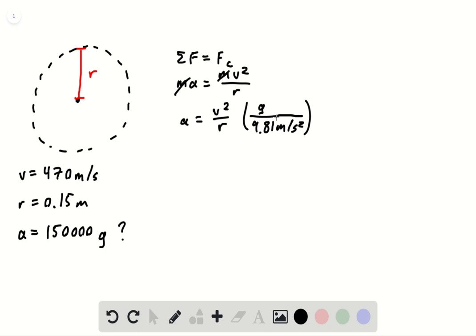And we'll cancel the conversion factor. Plugging in the values, we get 470 squared over 0.15, which gives us 150,119 g's.